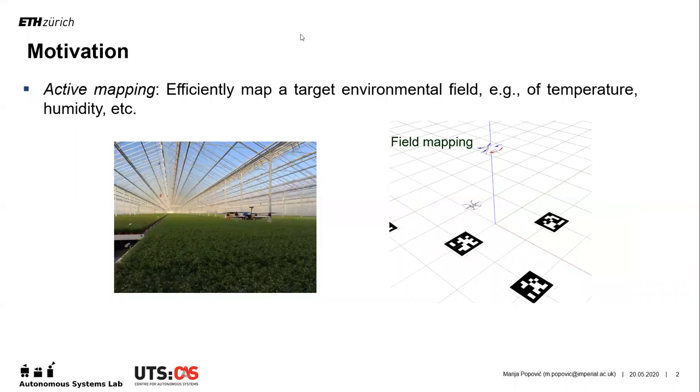Most previous approaches assume perfect pose information and only consider the current state of the field map when generating new plans. As a result, if the robot is lost, it continues to take measurements at inconsistent locations, leading to poor mapping performance.